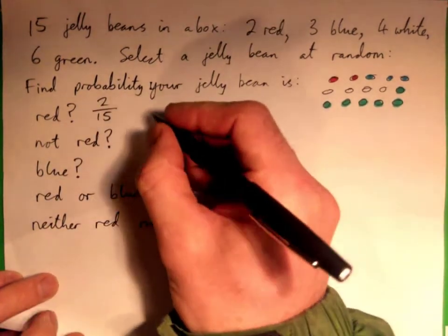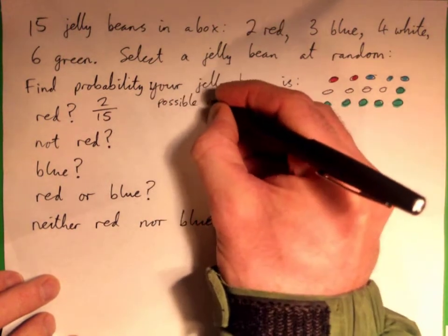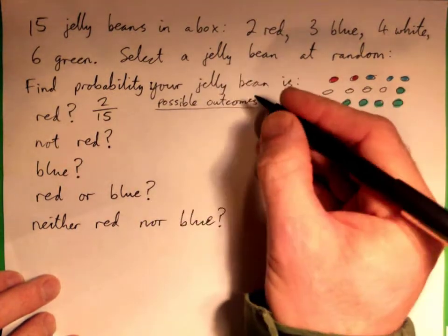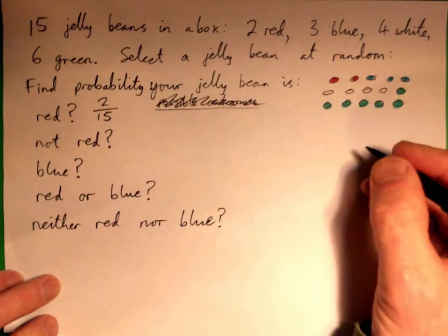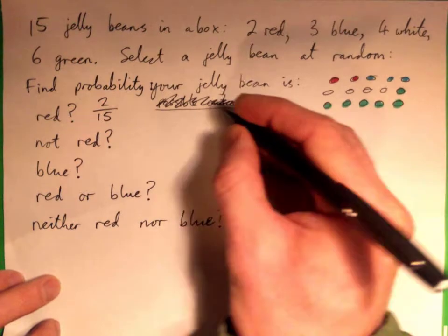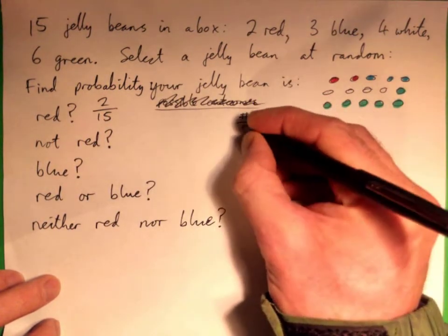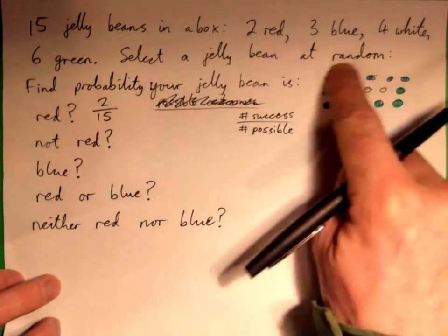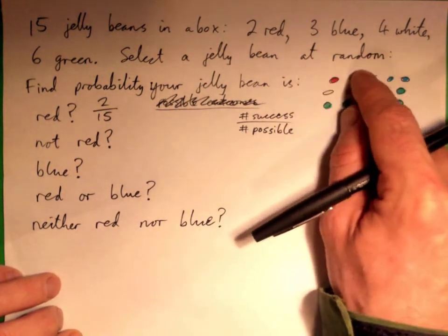It's the number of successes, which would be red, over the number of possible outcomes. So there are 15 possible outcomes. If I select a jelly bean, I could get a red, I could get a blue, a white, or a green.